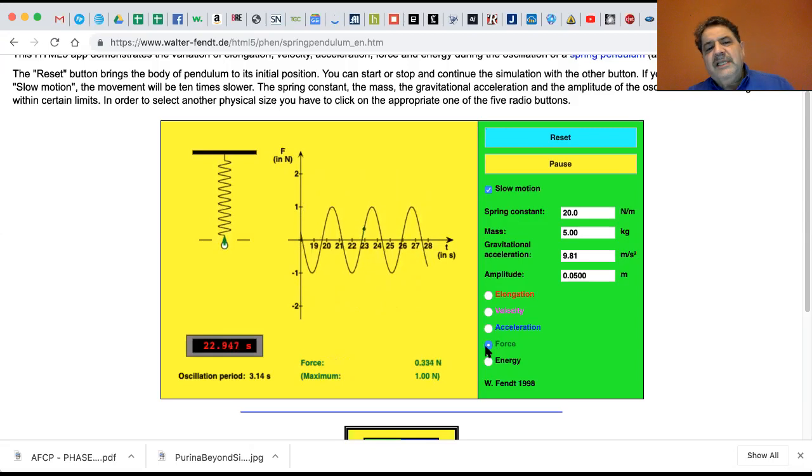The force is least, and the acceleration is least as it goes through the zero crossing. But as this pulls down, the force to make it want to go up is maximum, and so is the acceleration. As it gets to the top,